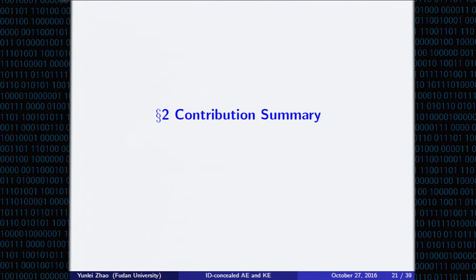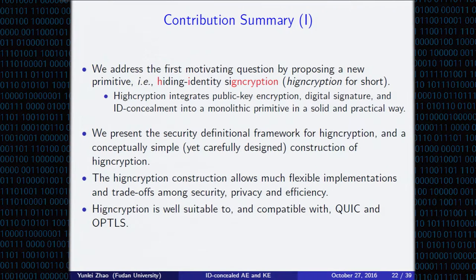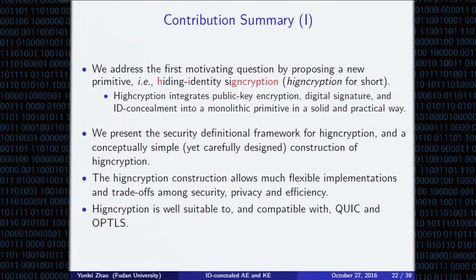We summarise our contributions. We address the first motivating question by proposing a new primitive named HICE — hiding identity-concealed authenticated key exchange. HICE integrates public-key encryption, digital signature, and identity concealment into a monolithic primitive in a solid and practical way. We present the security definition framework for HICE and a conceptually simple yet carefully designed construction. HICE allows very flexible implementations and trade-offs among security, privacy, and efficiency according to different application scenarios. HICE is also a well-suitable tool, compatible with QUIC and OPTS.